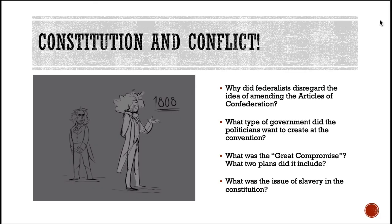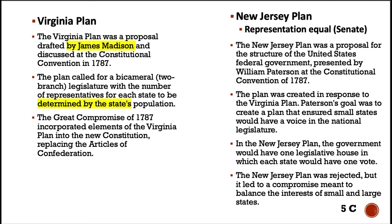The Constitution and conflict — there was no shortage of it when we were forming our new nation. Think about: why did Federalists disregard the idea of amending the Articles of Confederation? What type of government did politicians want to create at the convention? And what was the great compromise — what two plans did it include? By the end of this lesson, you should be able to answer these questions. Also, what was the issue of slavery in the Constitution? James Madison proposed a plan — a bicameral legislature, meaning a Congress split up into two different sections.